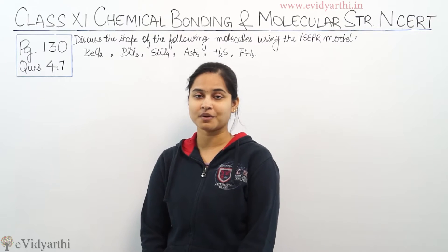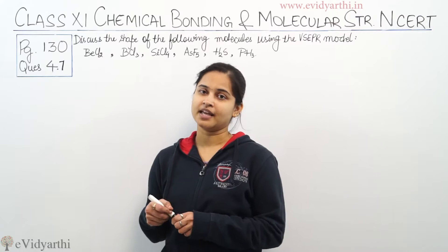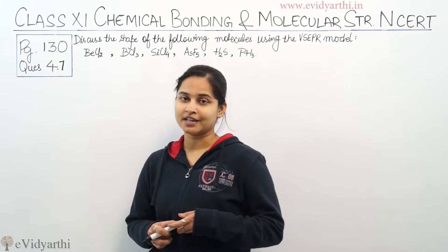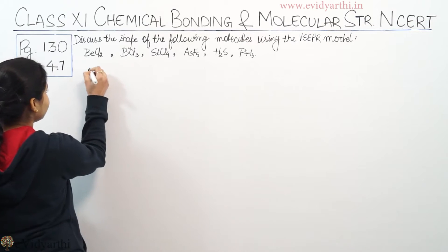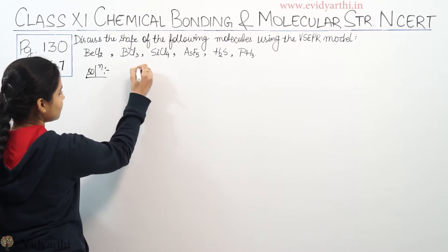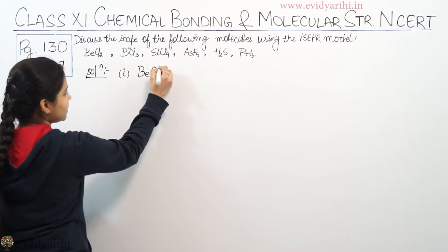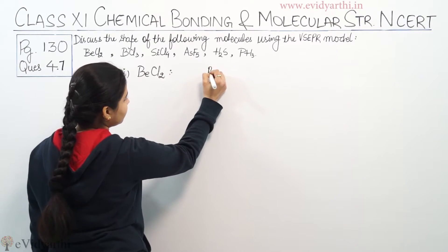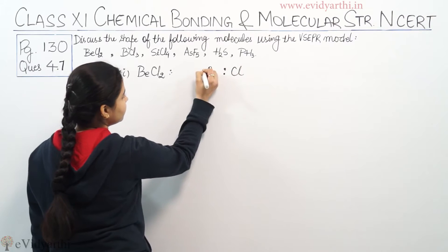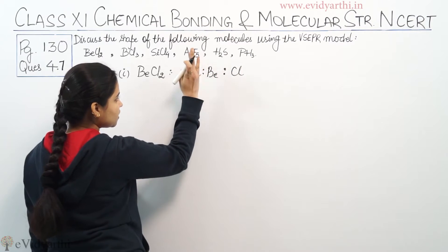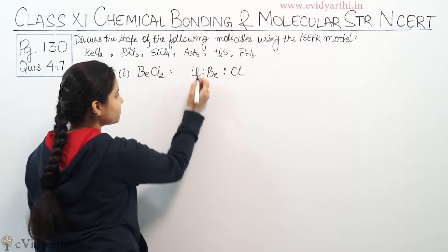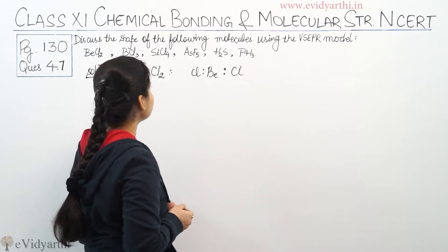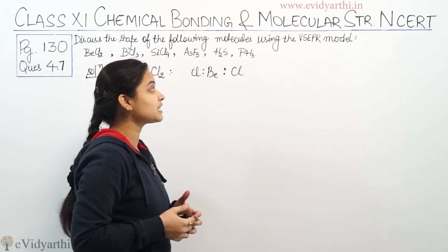Let's begin with the first molecule. I won't be explaining the Lewis structure derivation here; I'll be explaining just the shape of the molecules according to the VSEPR model. If the Lewis structure is required in other questions, I'll discuss it there. Here we'll just focus on the shapes of the molecule.